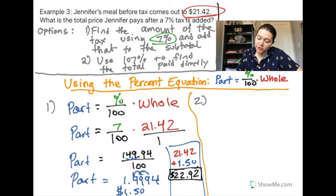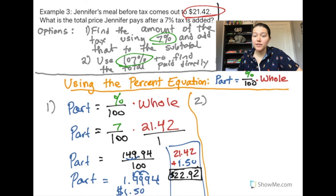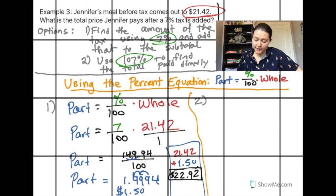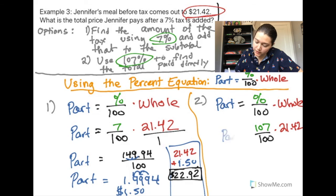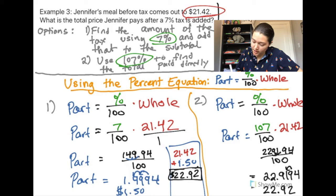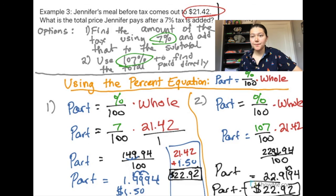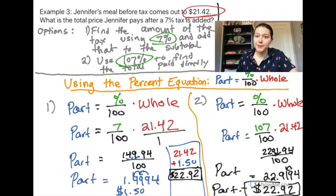The second method uses 107%. We don't need the extra addition step because using 107% automatically includes both the subtotal and the tax. Here, 107 over 100 times $21.42 gives $22.92 — the same answer as method one. Great job, everyone.